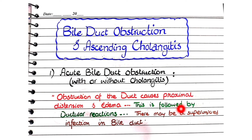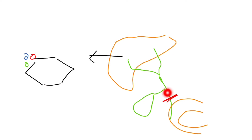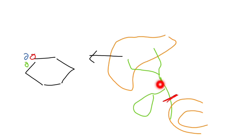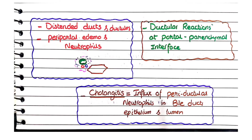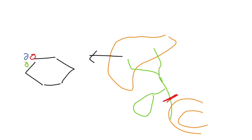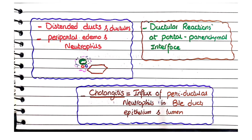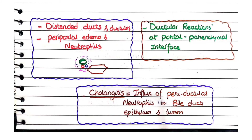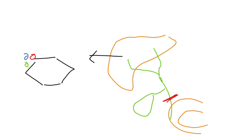The third feature is superimposed ascending cholangitis, visible as influx of periductular neutrophils into the bile duct epithelium and lumen. In ascending cholangitis, neutrophils influx into the bile duct epithelium and lumen of the larger bile ducts. If neutrophils are only present at the corners of hepatocytic lobules but not in the bile duct epithelium and lumen, this is a feature of acute bile duct obstruction only, not ascending cholangitis.